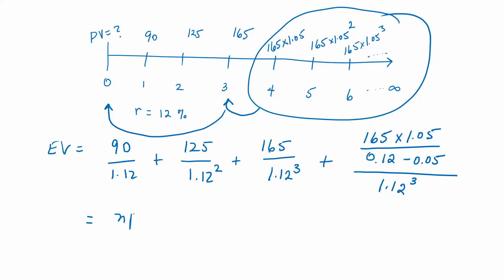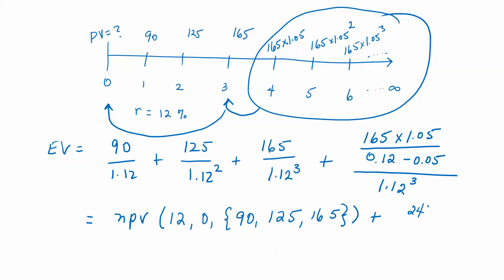To make this calculation go more efficiently, you can feed the first three cash flows into the NPV function if you're using a TI, or just list them if you're using an HP or BA2+. Compute the terminal value and you will get 2475. Remember, that's the value projected as of date three, so we would still have to discount that.